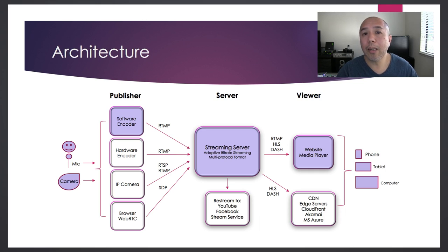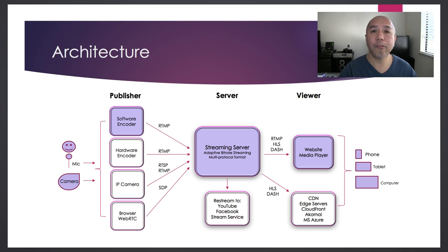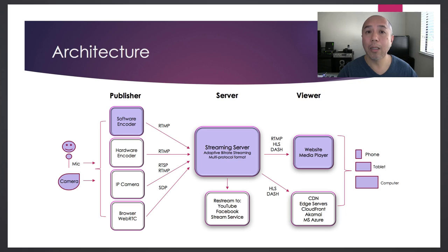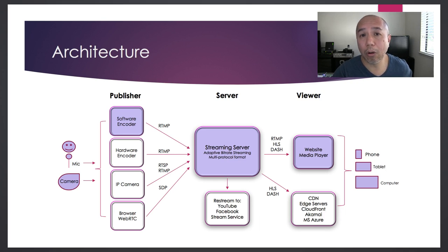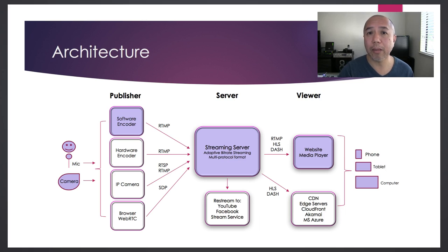You can also use an IP camera — a camera connected to the network — which allows you to stream using RTSP, or Real-Time Streaming Protocol. When using RTSP, you typically need to port-forward, especially if your streaming server is outside the local network. However, some IP cameras also support RTMP, so you can push the stream out just like a software or hardware encoder without needing to open up the firewall.